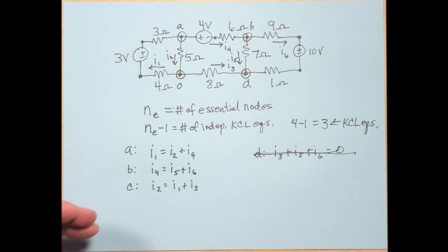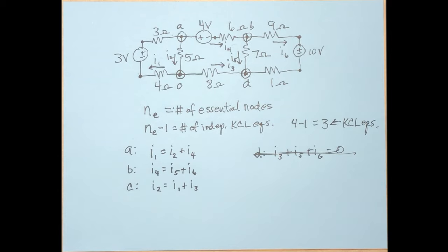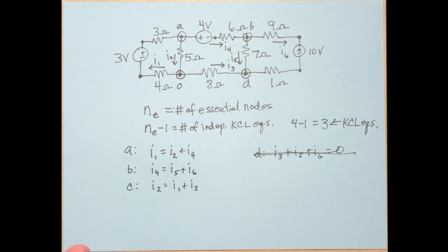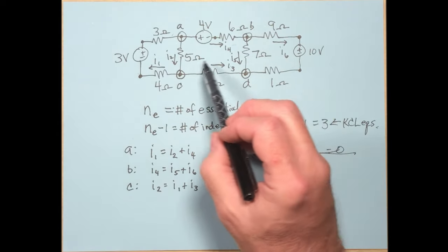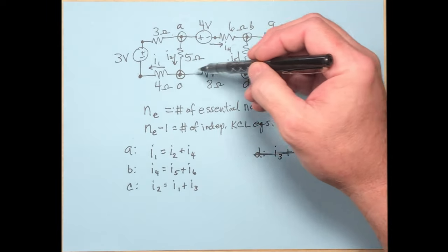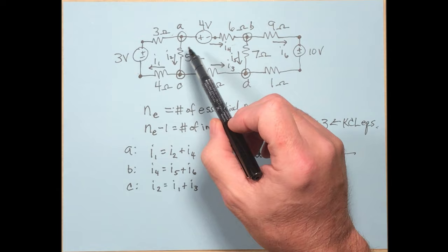We have six unknowns (I1 through I6) and so far only three independent equations. We need six total, so we need three more from KVL. You need to write equations that include every element in at least one equation. The easiest way is to write loop equations for the meshes. There are three meshes here, so write a KVL equation for each mesh.